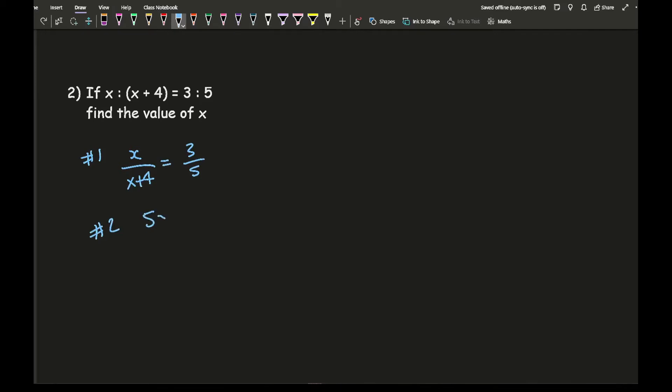I can then expand the bracket. So I've got 5x equals 3x plus 12. And then I want to make x the subject because I'm trying to solve this for x. So step three is I've got 5x equals 3x plus 12. So I've got 2x equals 12, therefore x equals 6. And there is my final answer.